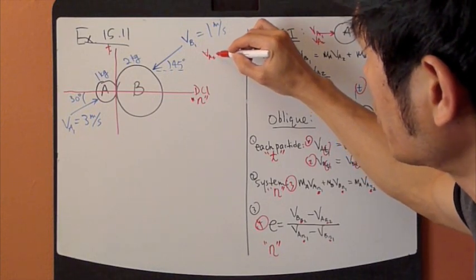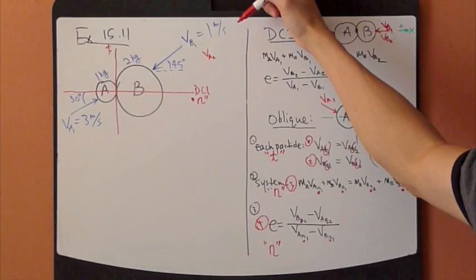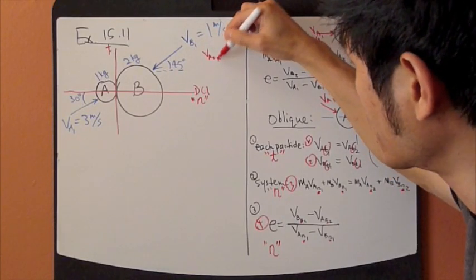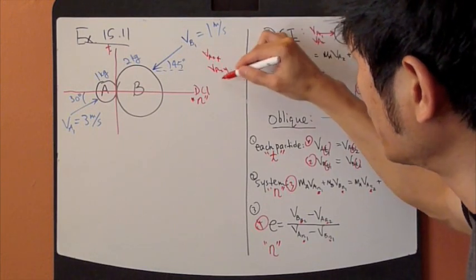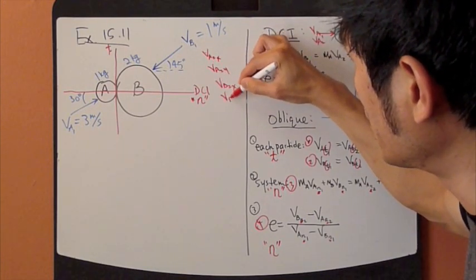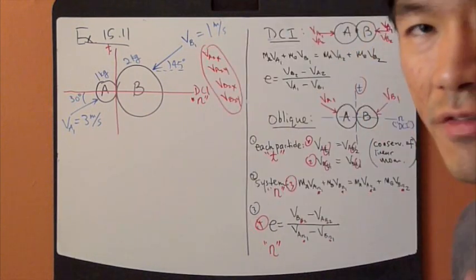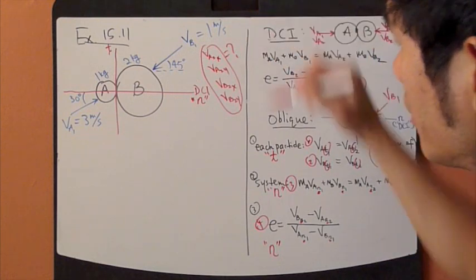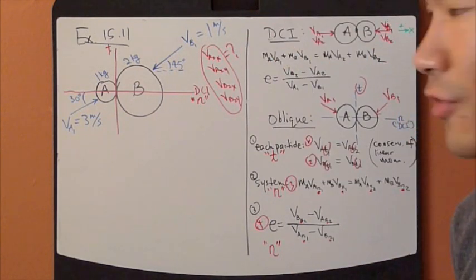You are asked to find the velocity after impact. So VA2, and you are asked to find the components of velocity. So VA2 X component, VA2 Y component, VB2 X component, and VB2 Y component. So you are asked to find four unknowns.